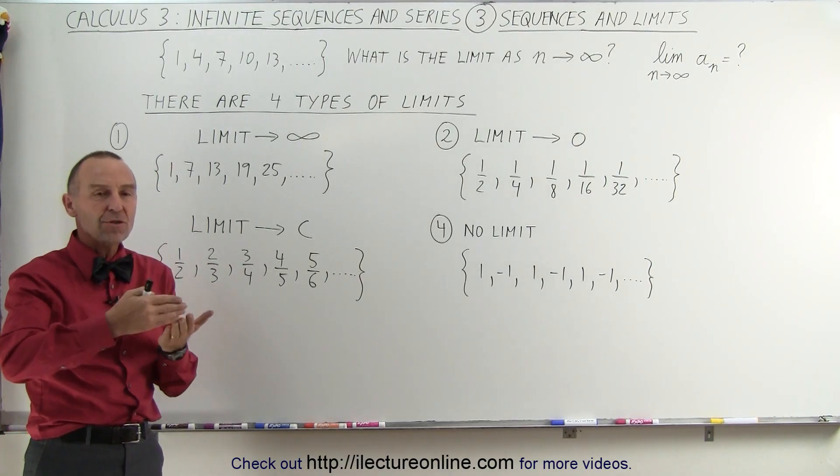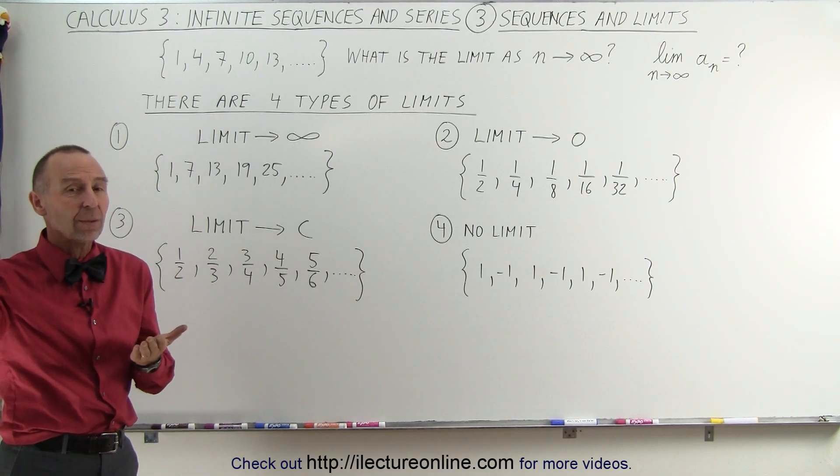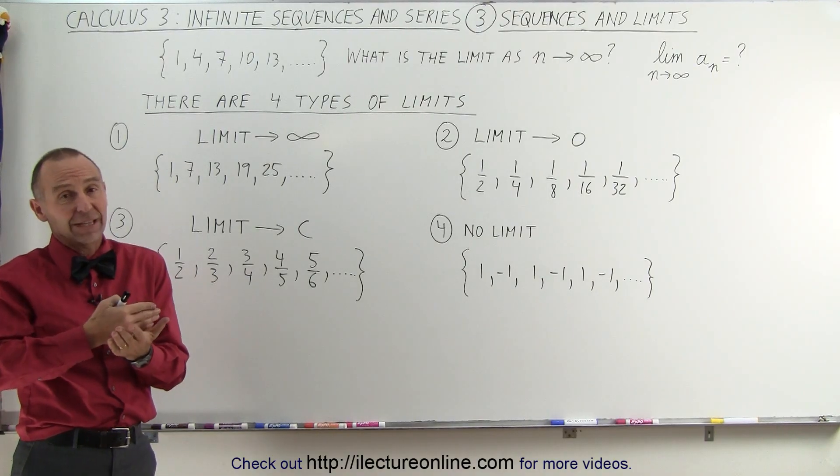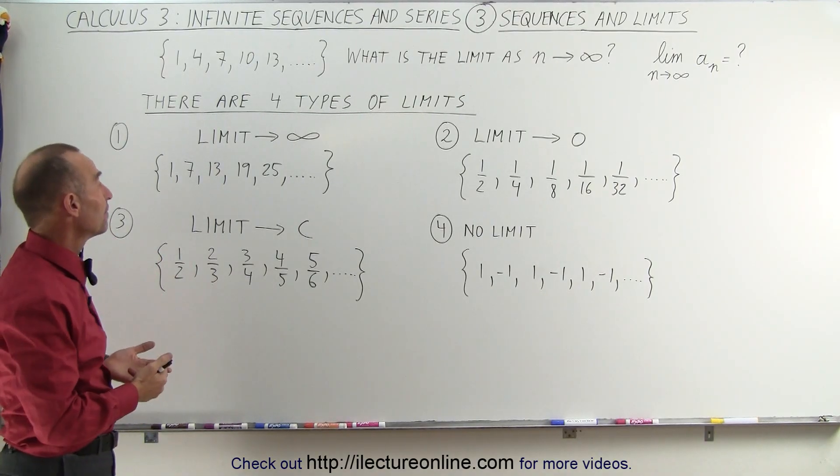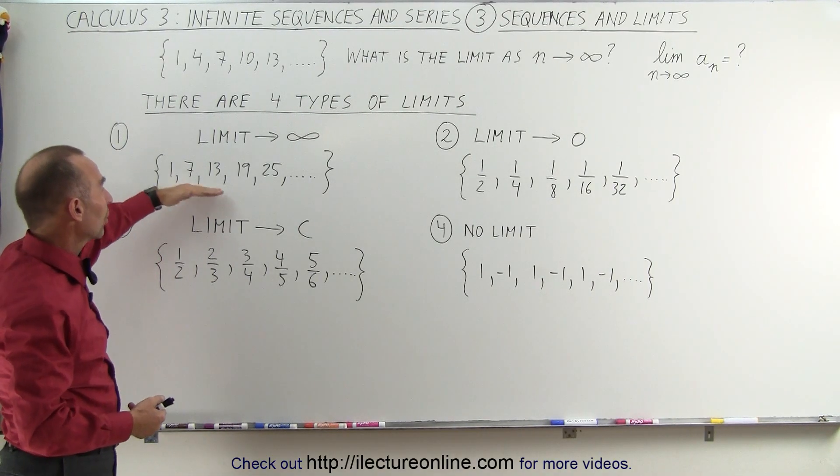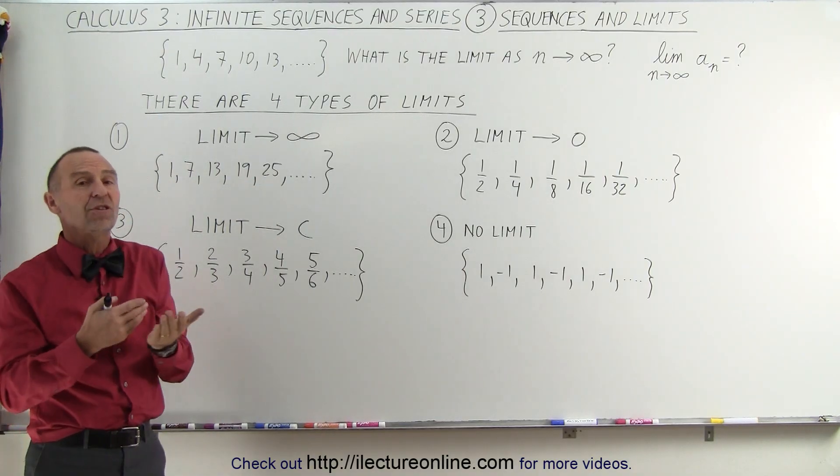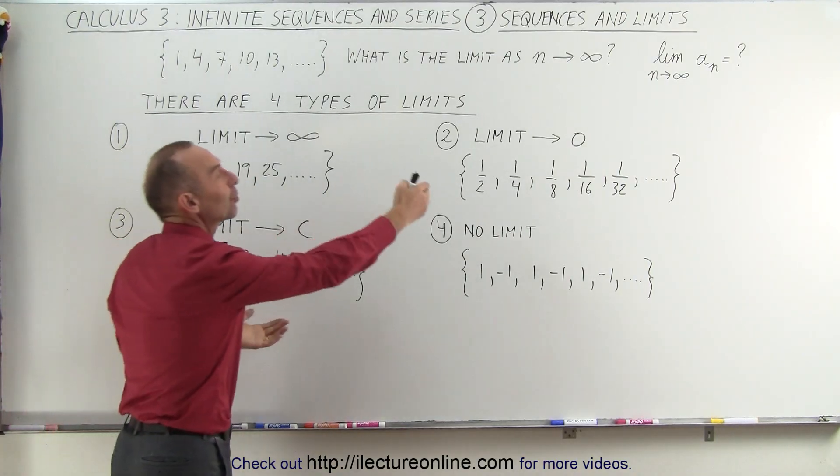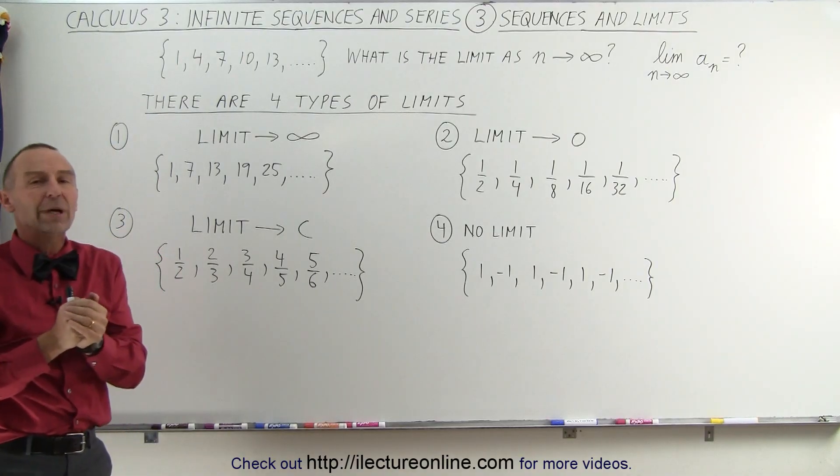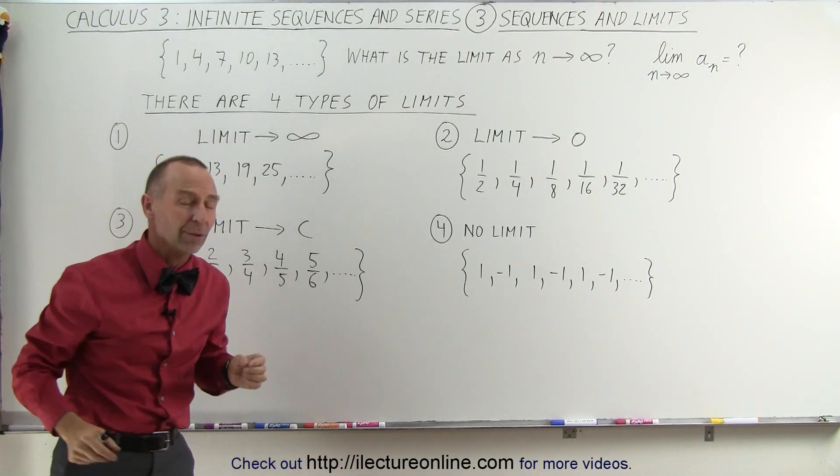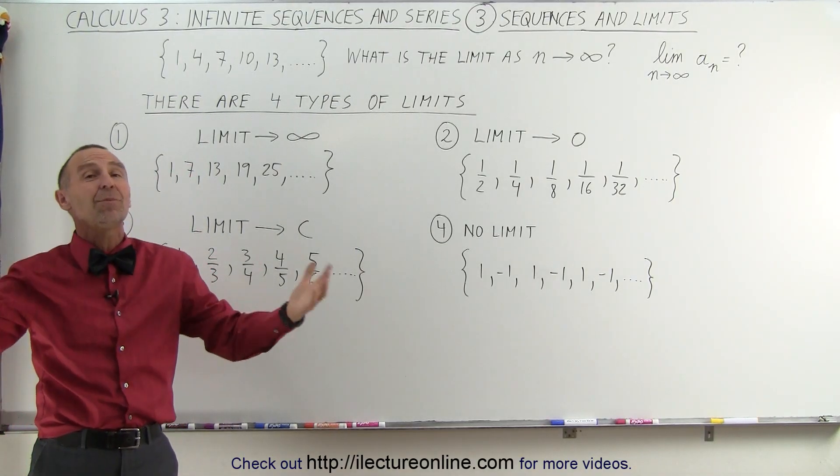What happens if we continue adding more and more numbers to the sequence? Essentially, a sequence typically has an infinite number of numbers. In this case, you can see that the numbers keep on increasing. The question is, what would be the final number, so to speak, if we go all the way to the very last number in the sequence? Well, what is the last number in the sequence?